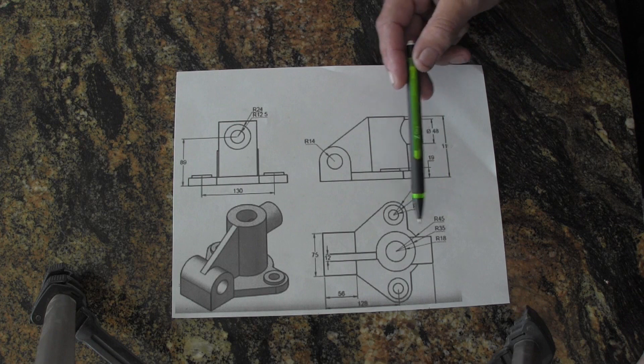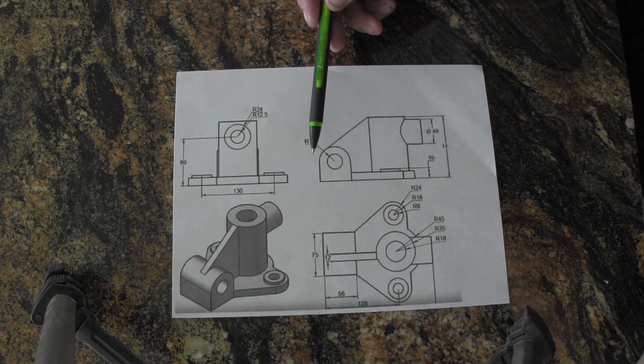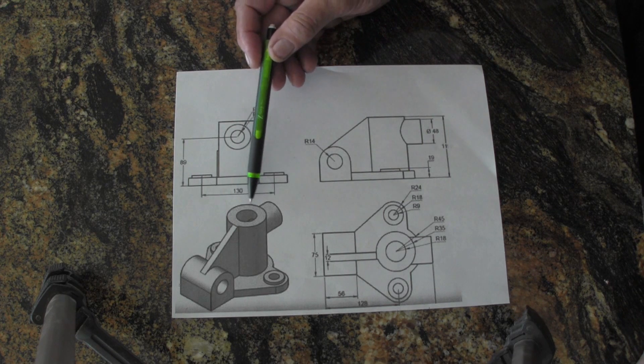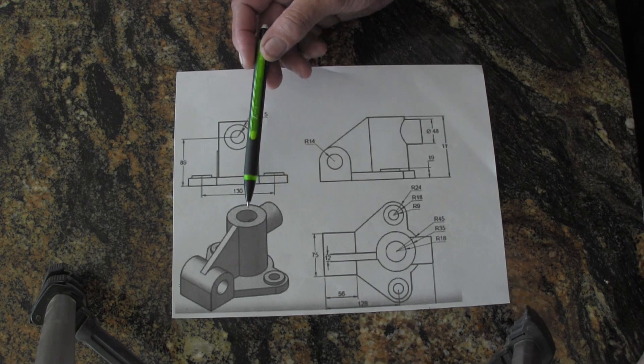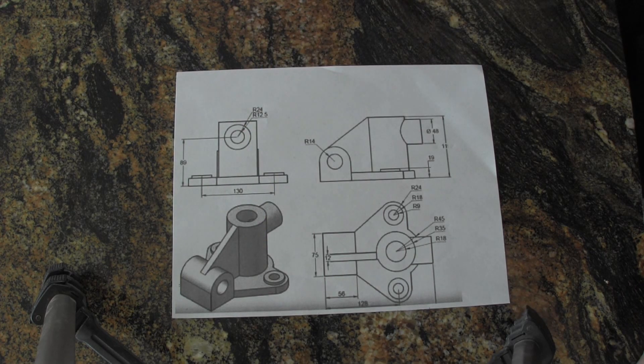You can see it's a 35mm radius. So is it 35mm up here at the top or is it the bottom? Is there going to be an interference problem?